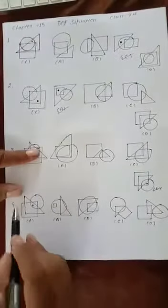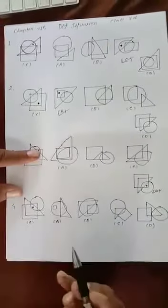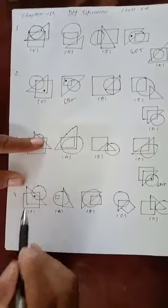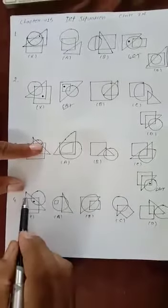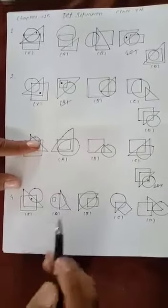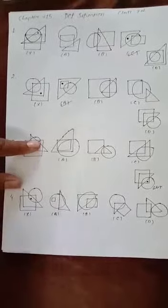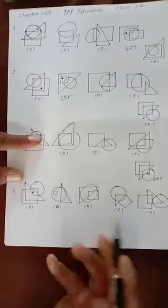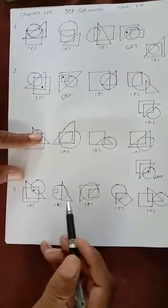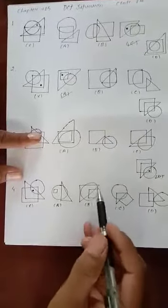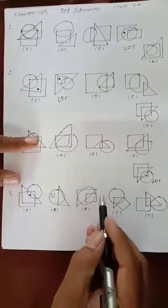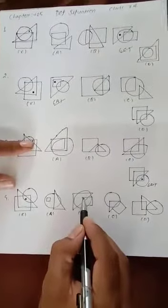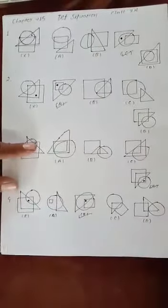For question number four, we find which condition is satisfied by this dot. The dot is inside a square, a triangle, and a circle — all three figures. We have to find a position where all three figures overlap. The first option is not possible because the square and triangle are not overlapping at all. In the third option, all three parts — triangle, circle, and square — are overlapping, so we can place the dot there. Our answer will be B.